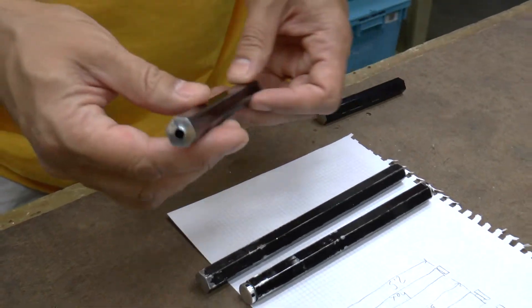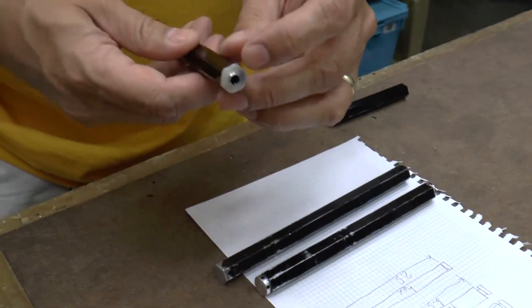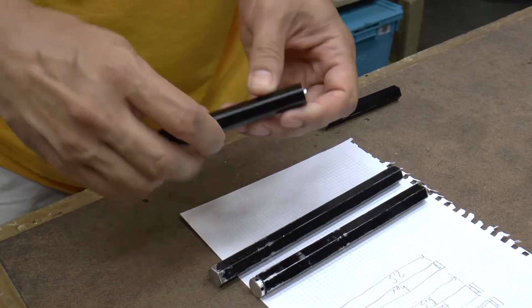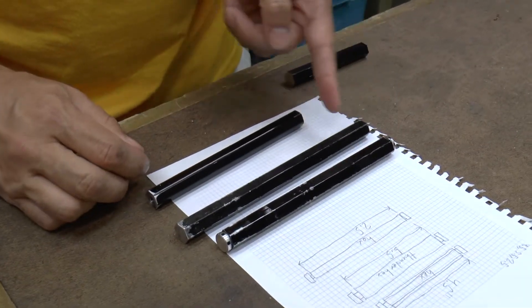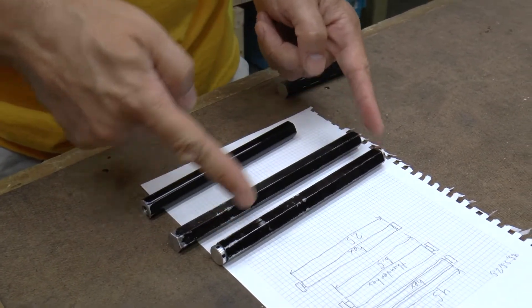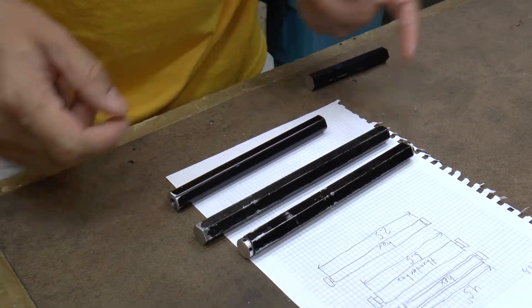So the first thing we want to do on these other three is take these to the chop saw and cut off one end to give you a nice good end that you can measure from the lengths to get your final length.